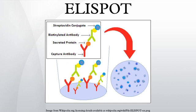ELISPOT assays employ a technique very similar to the sandwich enzyme-linked immunosorbent assay technique. Either a monoclonal or polyclonal capture antibody is coated aseptically onto a PVDF-backed microplate. These antibodies are chosen for their specificity for the analyte in question. The plate is blocked, usually with a serum protein that is non-reactive with any of the antibodies in the assay. After this, cells of interest are plated out at varying densities, along with antigen or mitogen, and then placed in a humidified 37°C CO2 incubator for a specified period of time. Cytokine secreted by activated cells is captured locally by the coated antibody on the high surface area PVDF membrane.